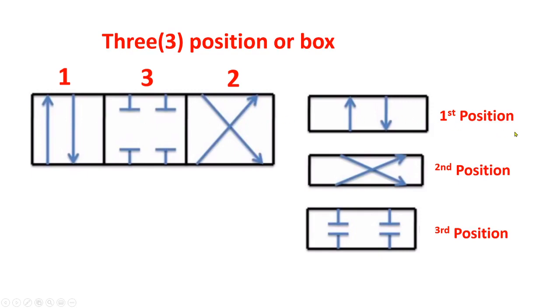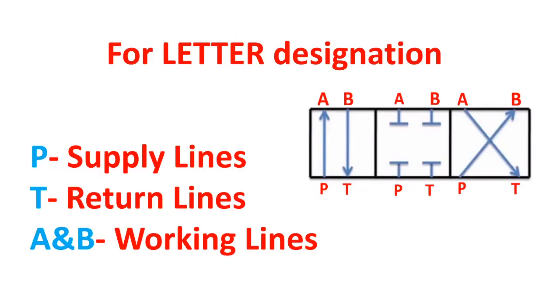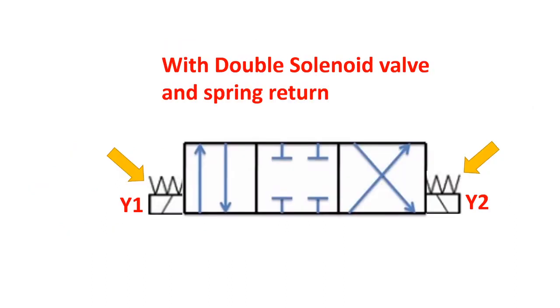And for letter designation, P means supply lines, T means return lines, A and B is working lines. And the last one is the symbol of solenoid valves with return spring.